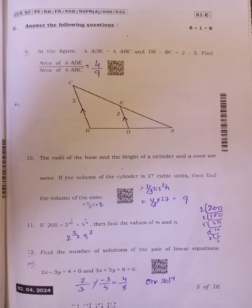Second section, answer the following questions. Ninth, in the figure, triangle ADE similar to triangle ABC and DE is to BC equals 2 is to 3, then find area of ADE by area of ABC. So the answer is 4 by 9.